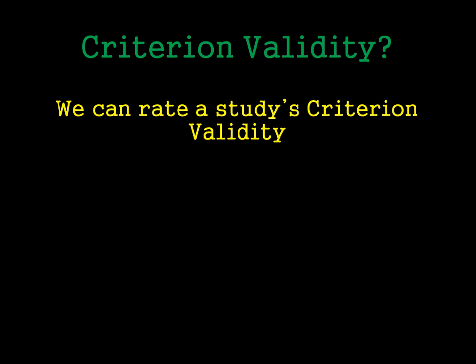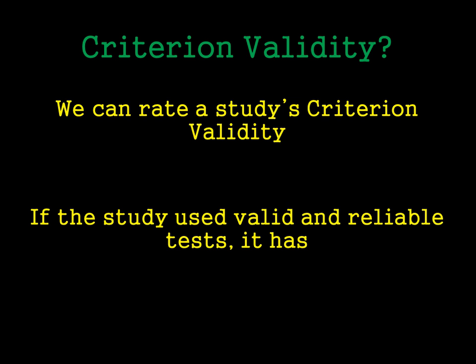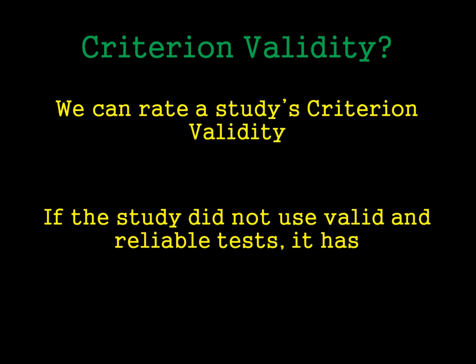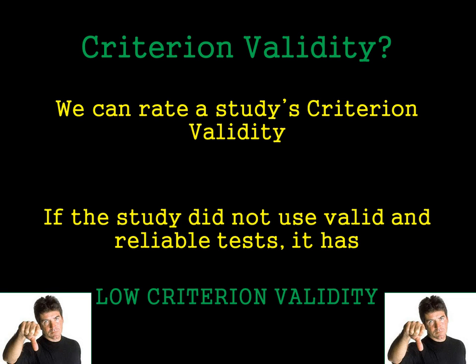Ultimately, we can rate a study's Criterion Validity. If a study uses a very valid and reliable test, then it has high Criterion Validity — we've picked a really good test, and that's a great study. On the other hand, if a study chooses a test that's not very valid or reliable compared to a gold standard, then it has low Criterion Validity, and the results really should be questioned.